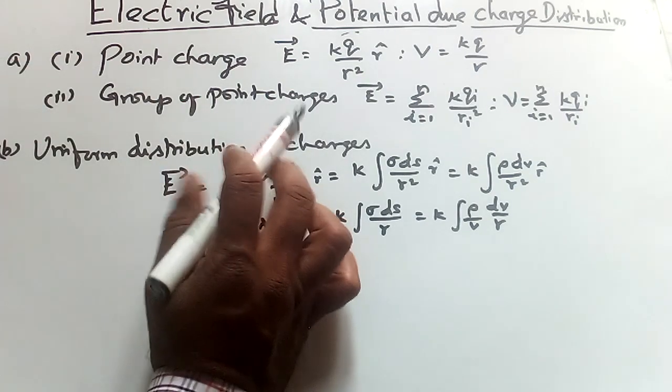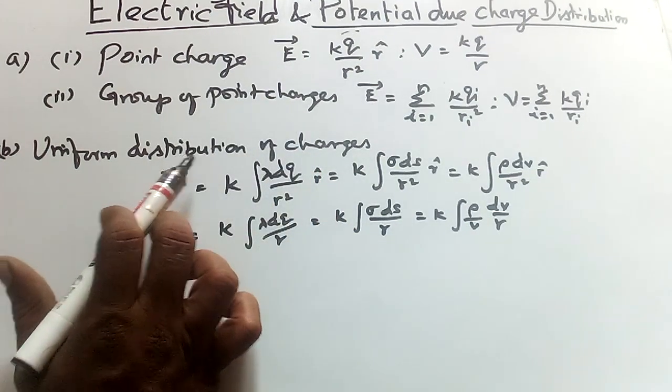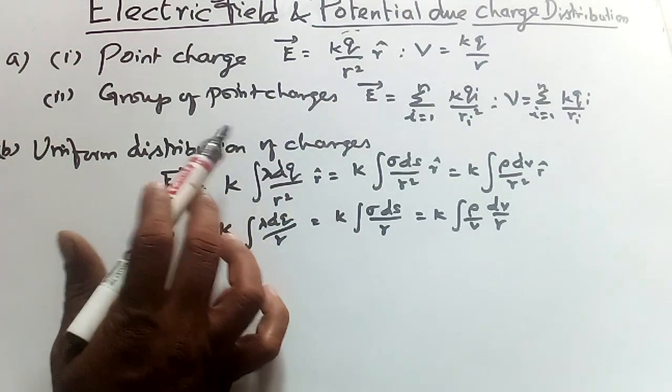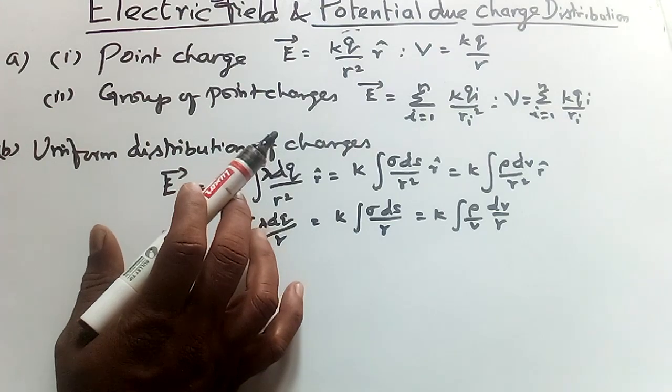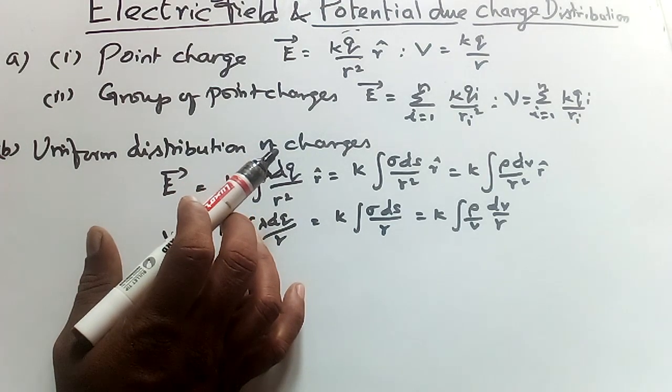So we can find for point charge, group of point charges, and uniform distribution of charges the respective electric field and potential due to charge distribution.